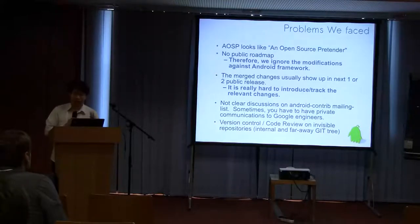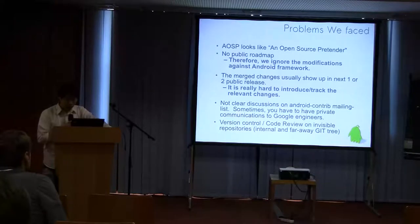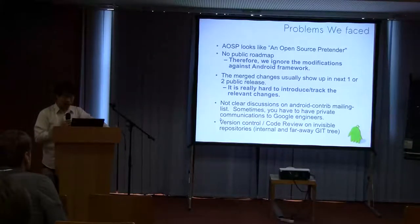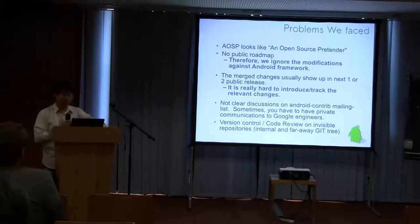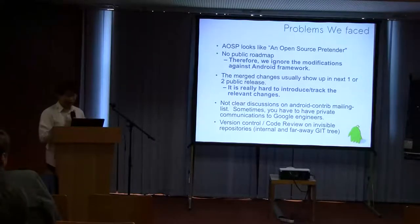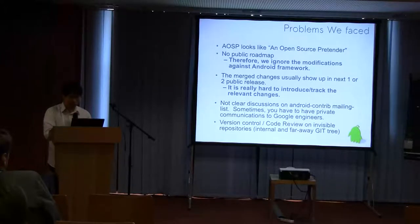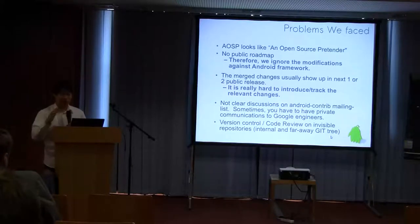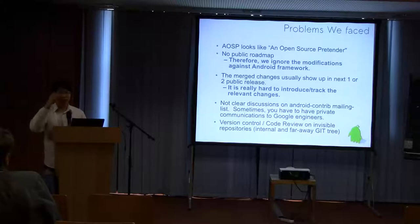All the patches are in the C library and some system paths. You can use Android Contribute to discuss with Google engineers, but it's not really clear what their attitude or roadmap is, because Google engineers sign an NDA and don't talk about the visual roadmap. The most difficult part is that you can use Git and Gerrit, but you have to use Gerrit on an invisible repository which is internal, far away from the public Git stream.